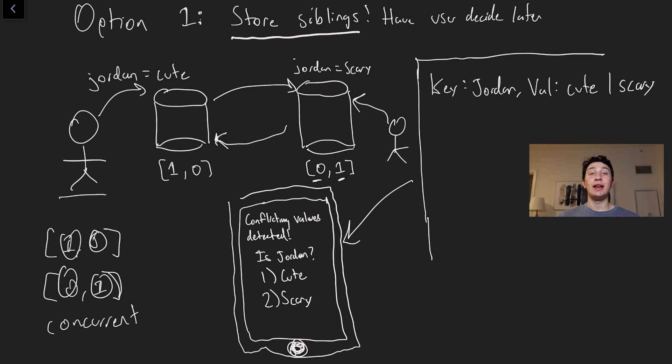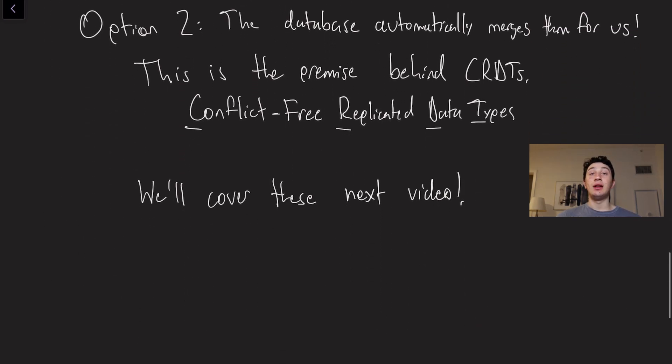Well, we can actually store both writes in our database. That's known as storing the siblings. So an example of a database right here now would be the key is Jordan, but the value is either cute and or scary. I know on both things. And so one way of actually kind of resolving this conflict is the next time that anyone makes a read from our databases, once they kind of combine and have both values, is you can actually offer the user a choice. Say, hey, wait a second, we see in the database that there are two different values. So do you choose cute or scary? And then once that value is chosen, we can now delete one of them. And now we've resolved our merge conflict. So that's one way of doing things is actually use the application layer and the user in order to manually resolve merge conflicts.